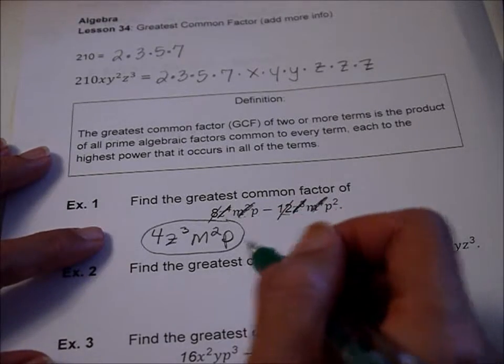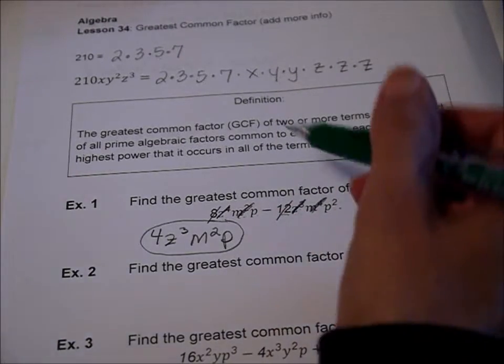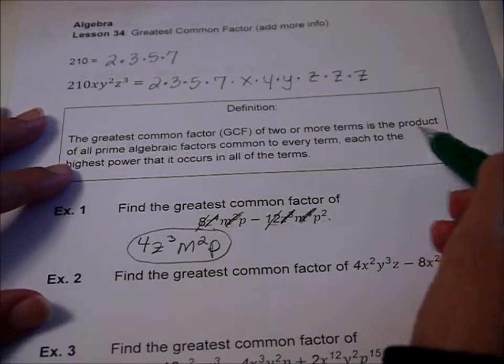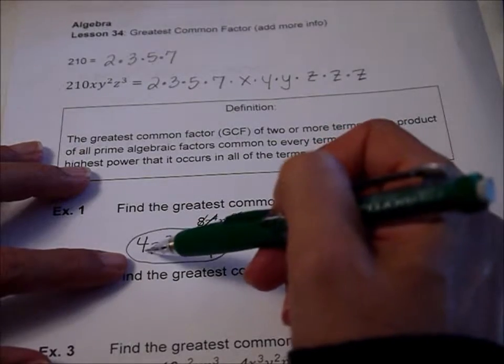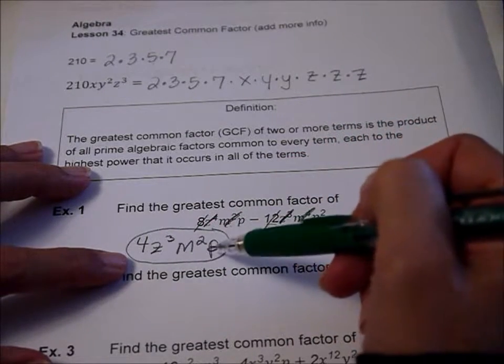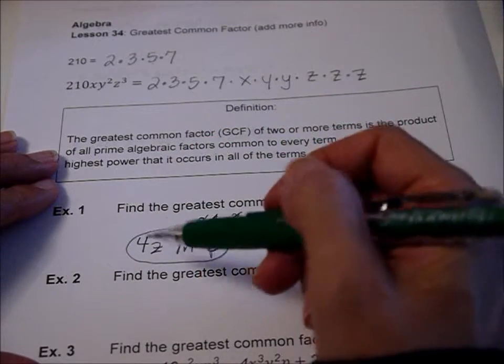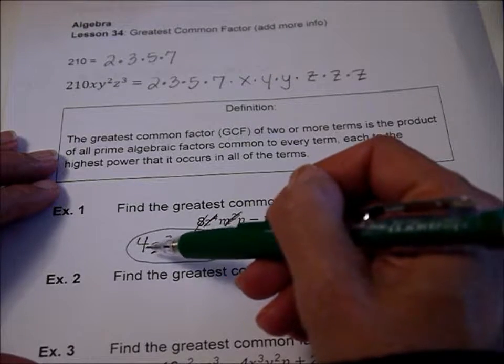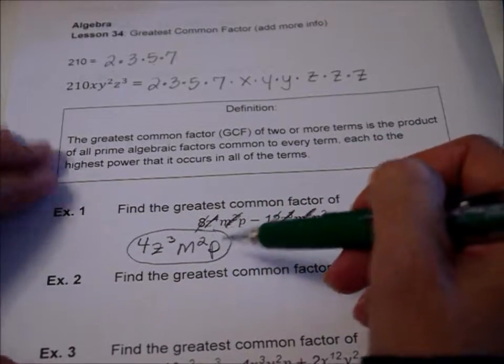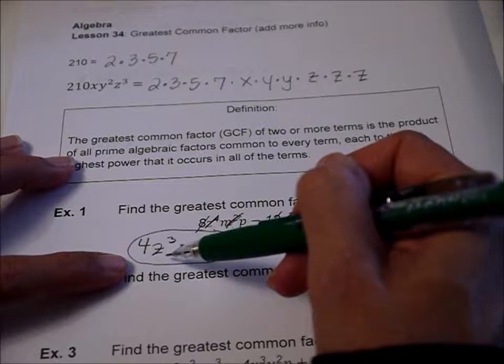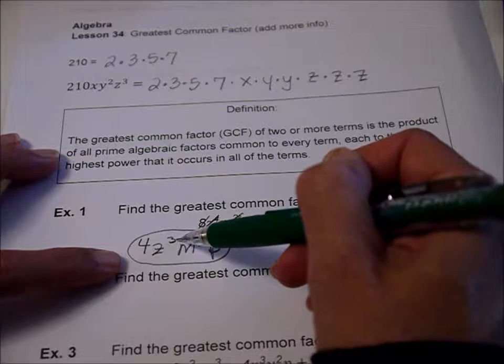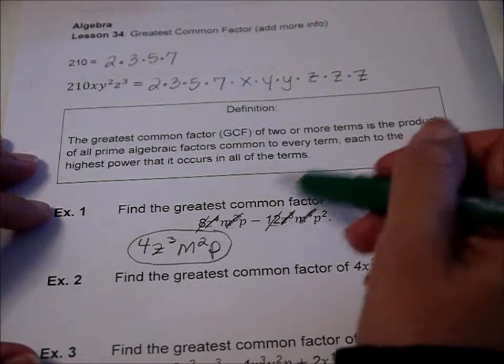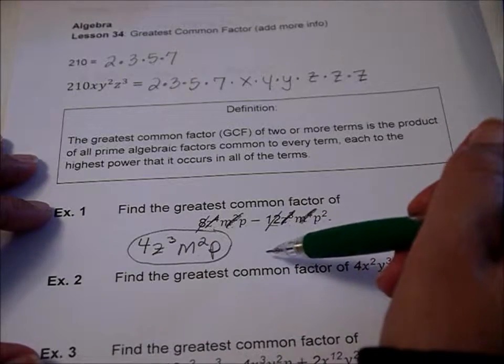So now let's go back to our definition and see if that makes more sense. The greatest common factor of two or more terms is the product. So this is a product, 4 times z³ times m² times p. So it's the product of all prime algebraic factors common to every term. So this was the prime factorization multiplied together. So we had a 4, and common to every term was a z³, common to every term was an m², and common to every term was a p, to the highest power that occurs in all of the terms.